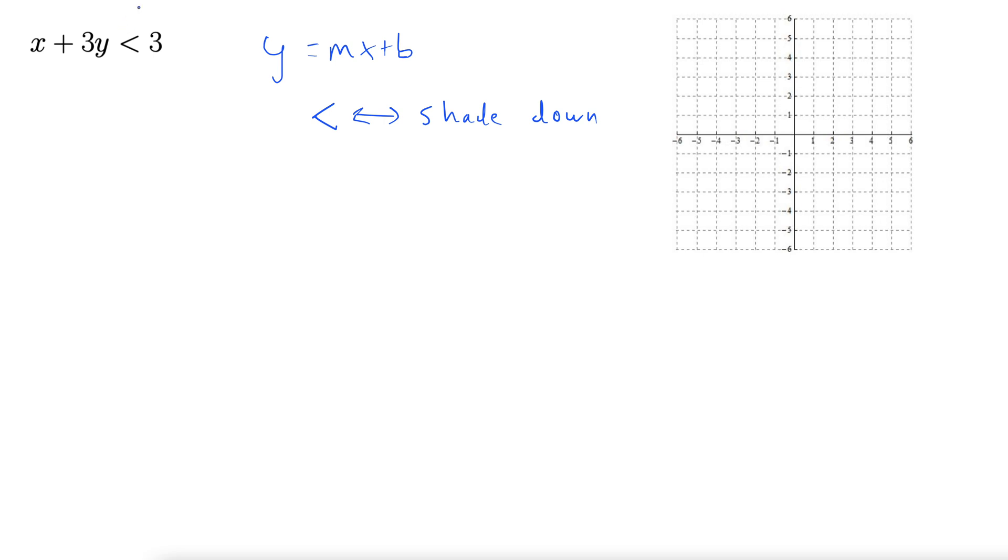I'm going to treat this like an equal sign and solve for y to get it into y equals mx plus b form. Subtract x to get 3y less than negative x plus 3, then divide both sides by 3. That gives us y less than negative one-third x plus 1.